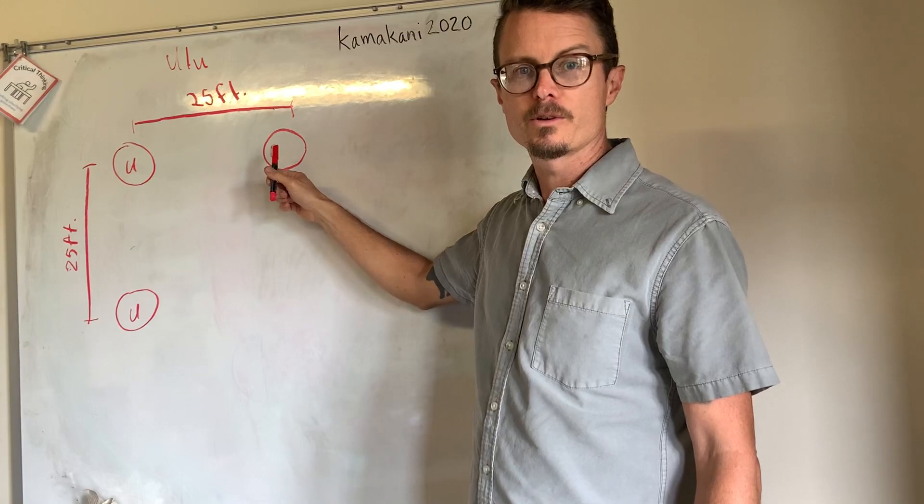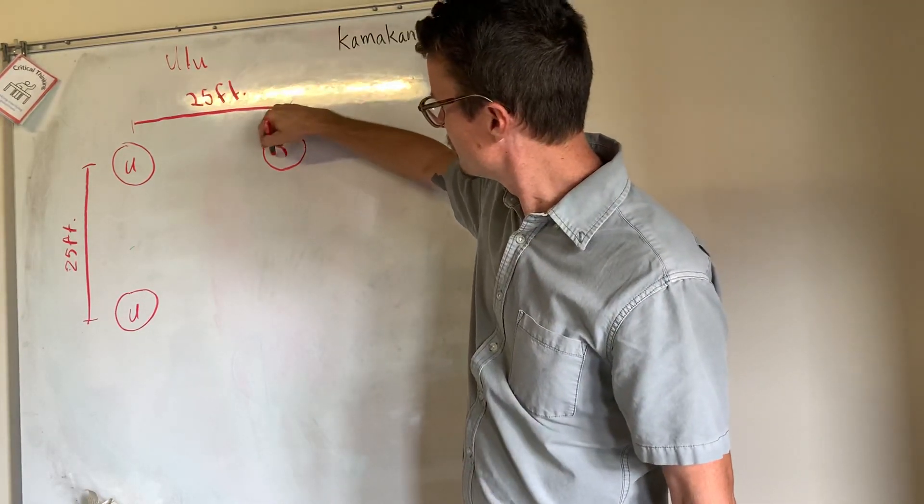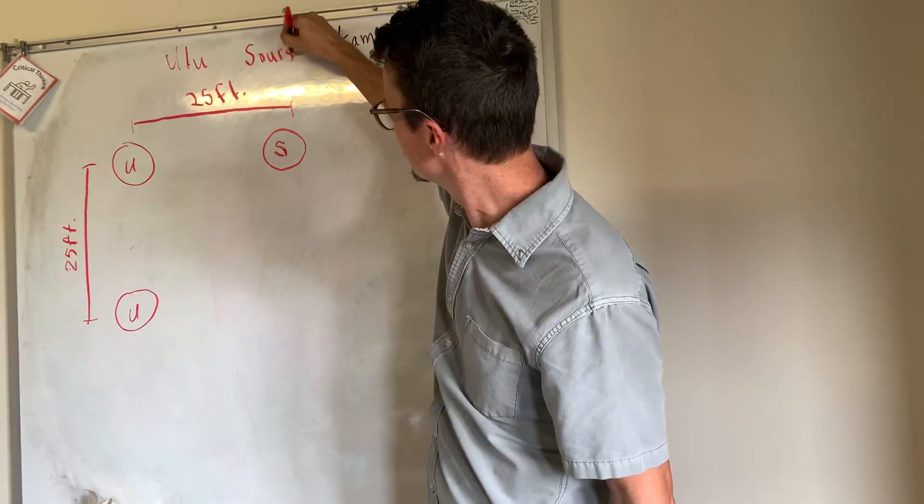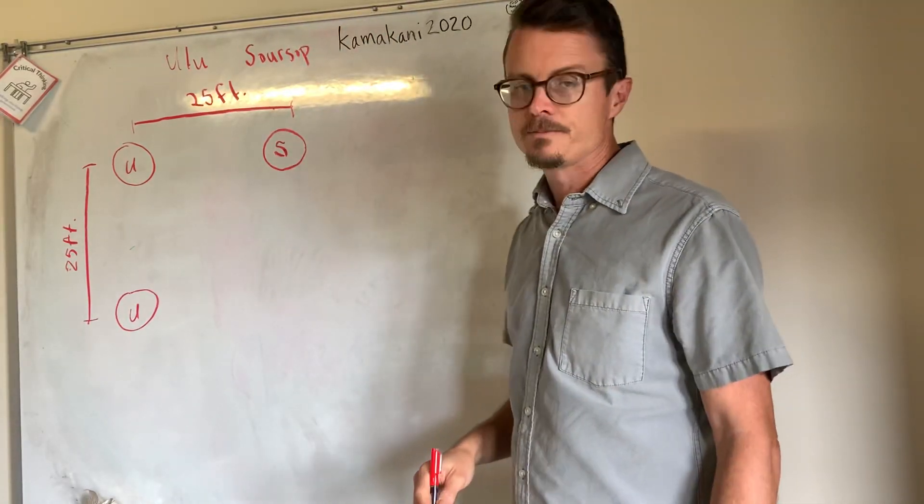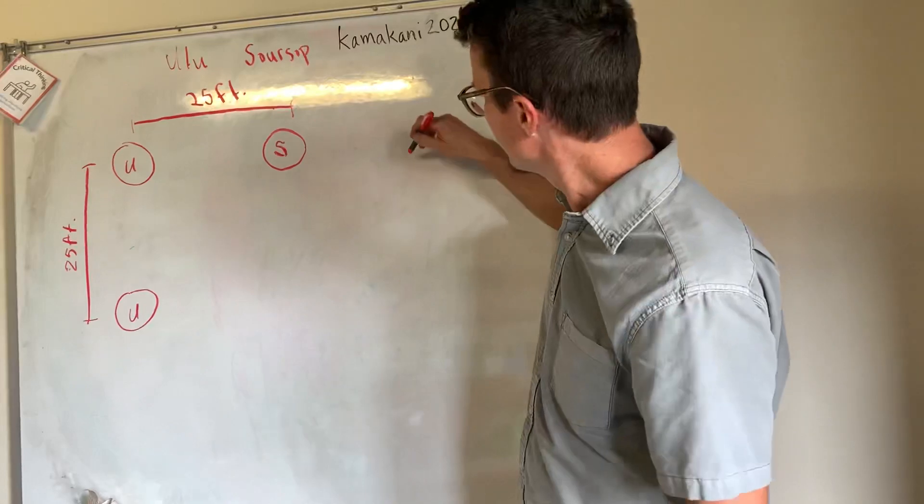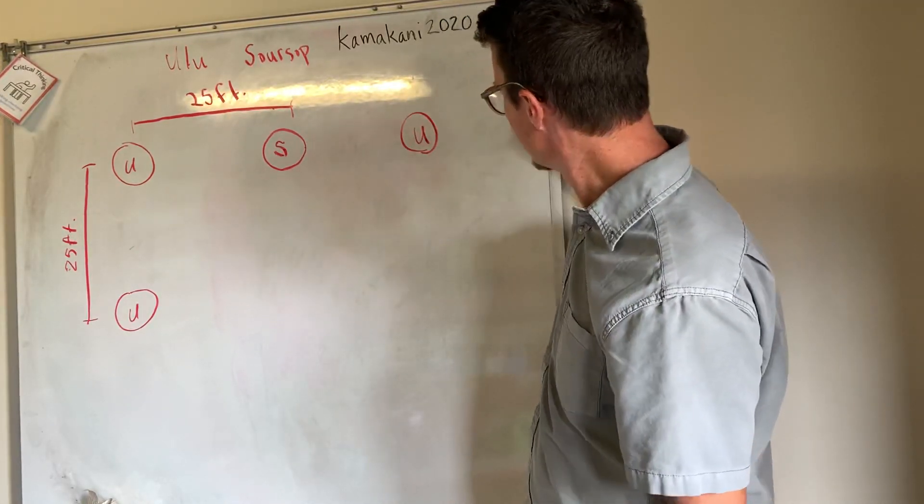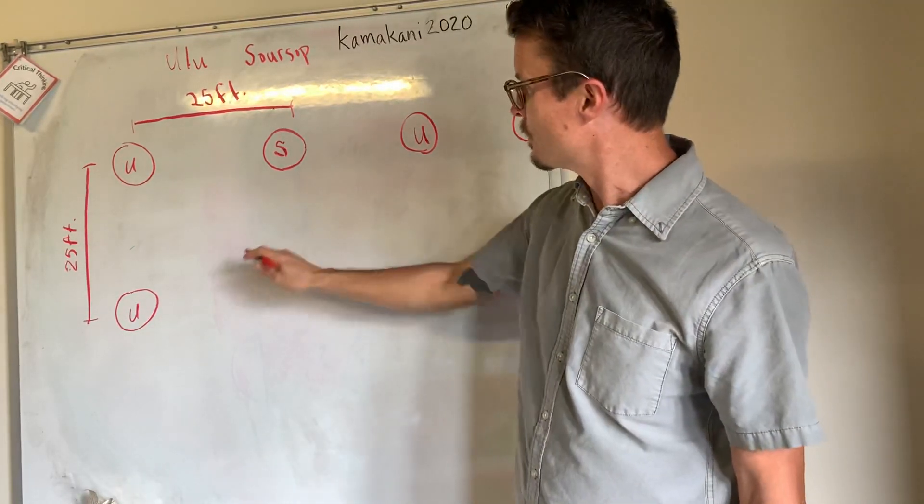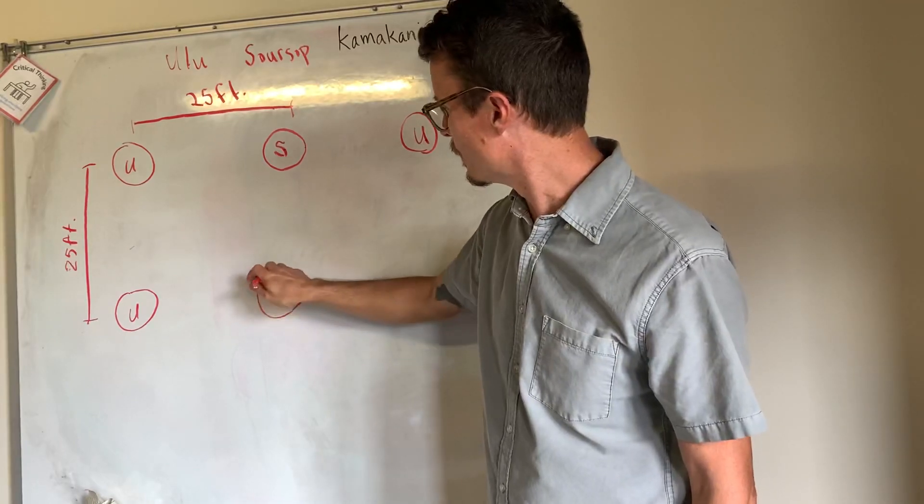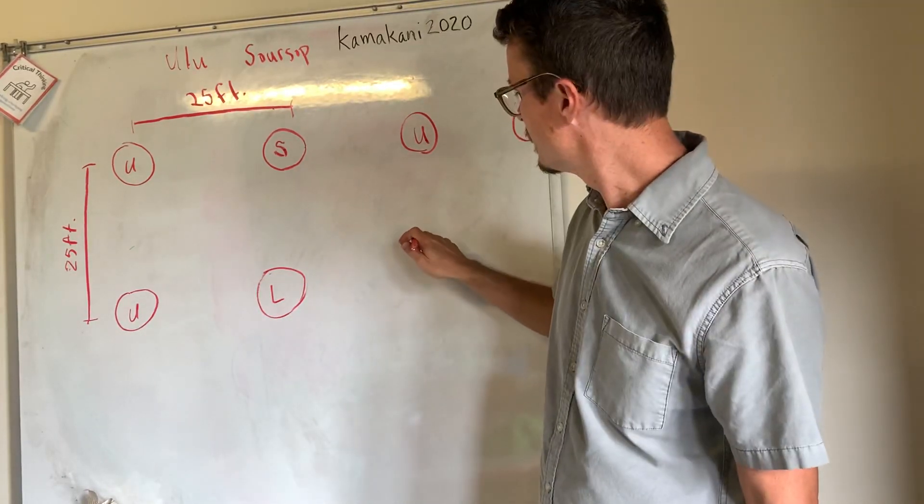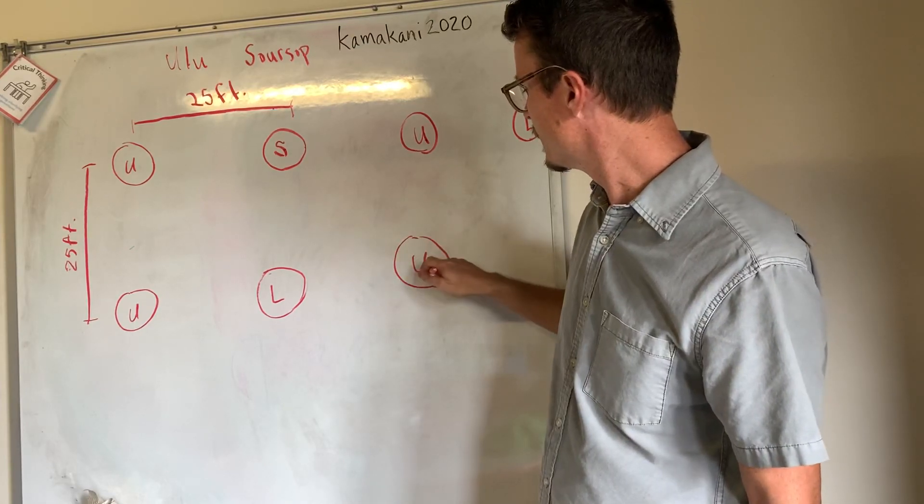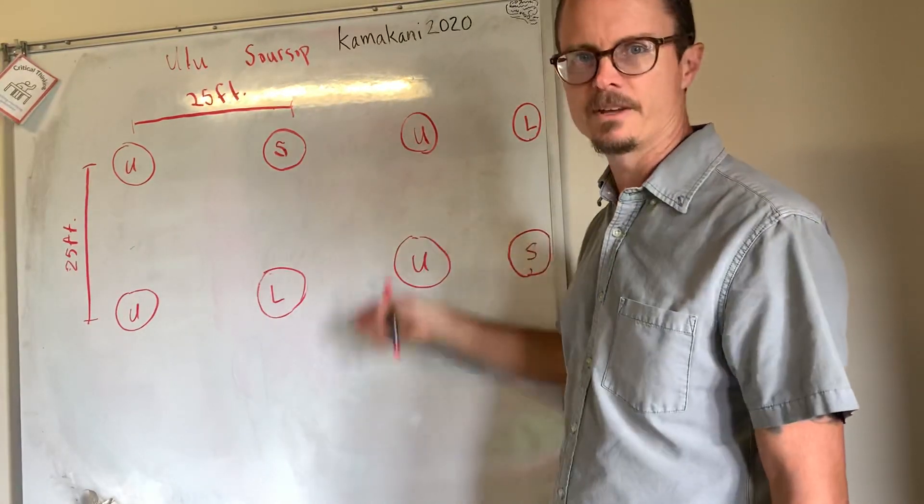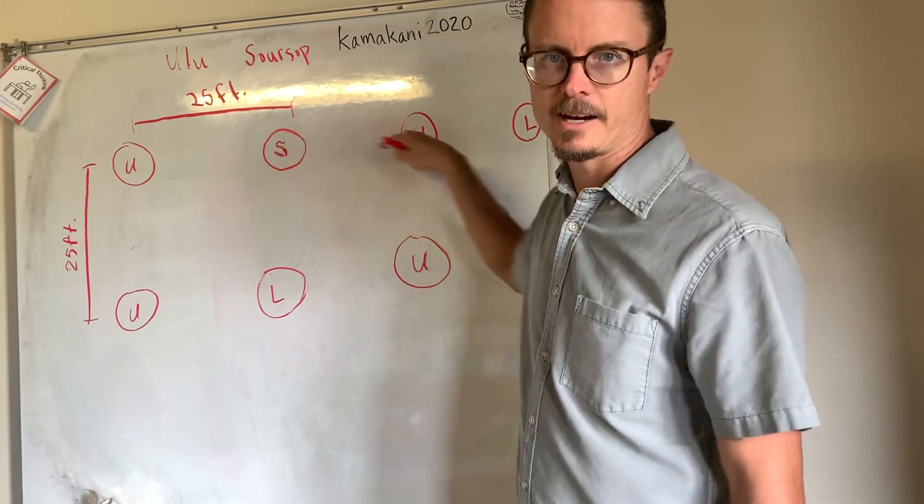So as we continue that pattern, the next one down will be an ulu. And then down again will be L for longan. And then we'll swap these out on the subsequent rows. So that would be longan, this would be ulu again, soursop. So the ulus will kind of follow rows going up and down the hillside, but side to side they'll be staggered with the other fruit trees.